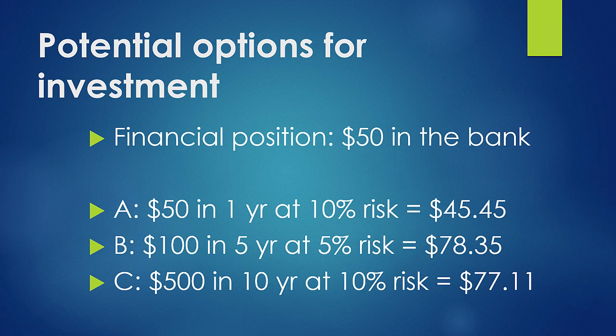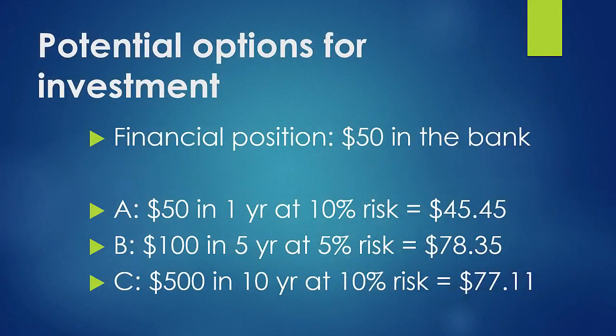Let's look at option two and option three. The future values are $100 and $500, so there's a big difference there. You would think that $500 would be preferable, but it's actually not. It's actually less valuable because you're holding so much more risk for such a longer period of time. It's actually more beneficial to choose the second option — that gives you the greatest amount of value.